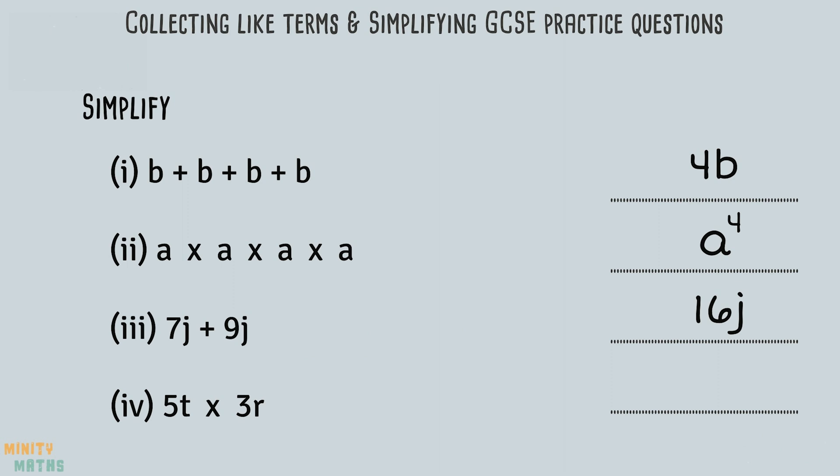Question four asks us to multiply 5t by 3r. Even though these are not like terms, as the variables t and r are different, we can still multiply these together. Firstly, multiply the coefficients together, giving us 15. Multiplying t by r means we have t lots of r, which can be written as tr. We therefore have 15 lots of tr.